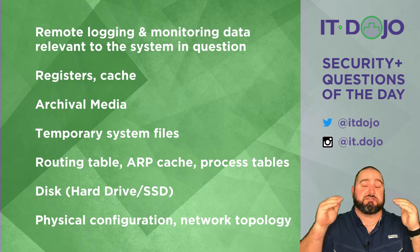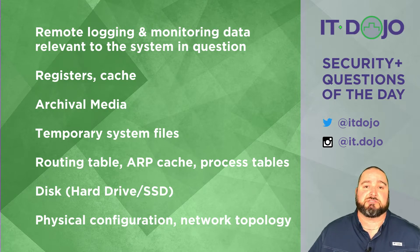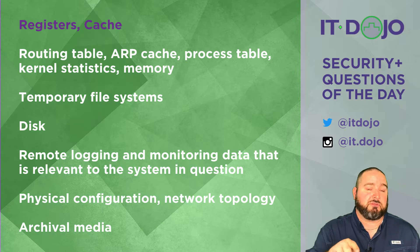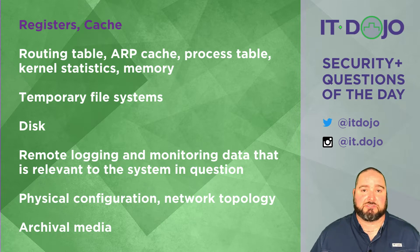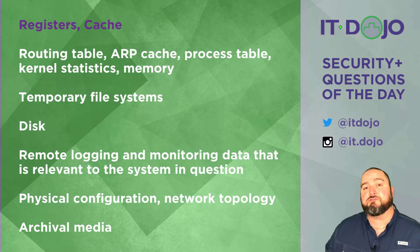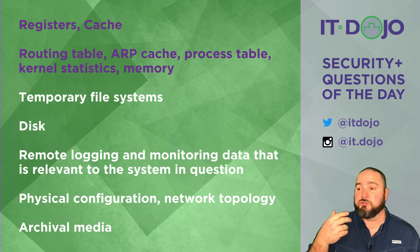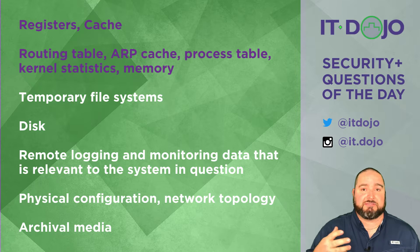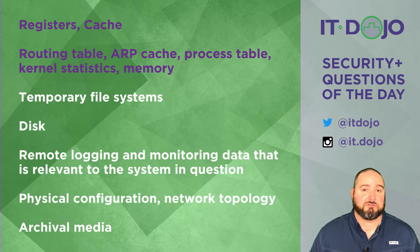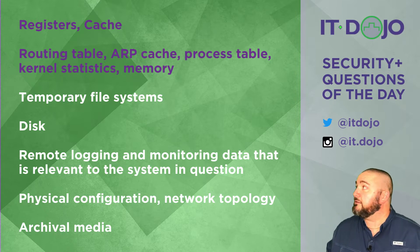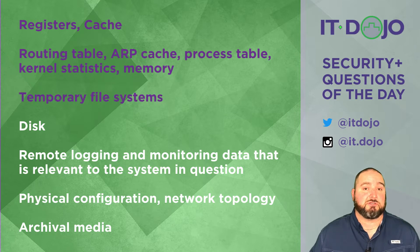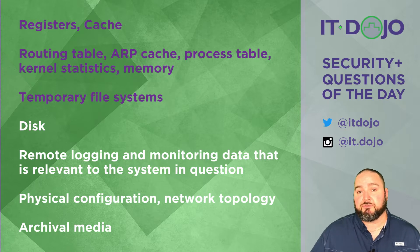Breaking it down from most to least volatile: the most volatile items on a computer system are caches and registers — storage places either on the motherboard or on the processor itself. Second most volatile is information stored in RAM, including your ARP table, name resolution table, routing table, process tables, and other dynamically created tables. Third in volatility are temporary storage locations like a temp folder or temp directory in Linux.